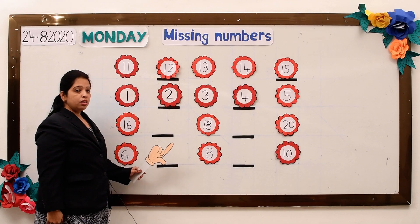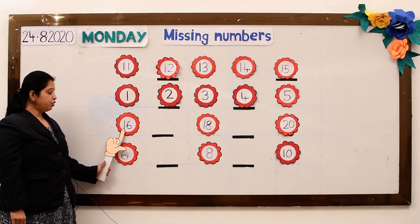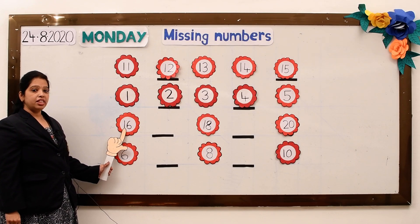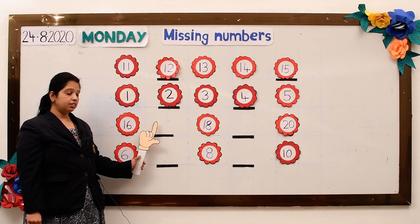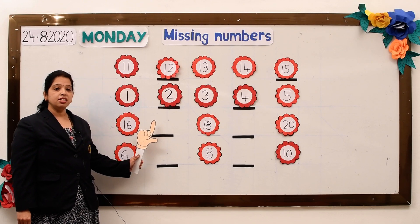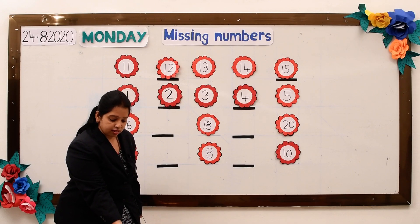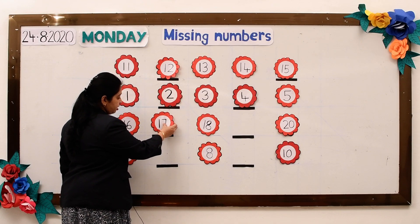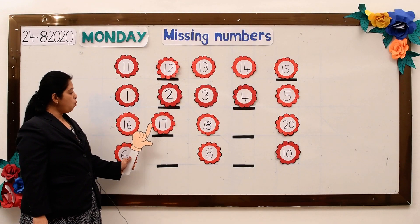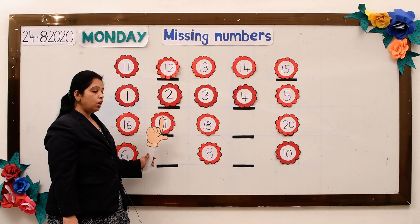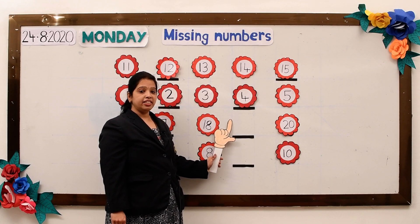Now let us move towards the third line. In the third line, which number can you see? Yes, 16. So can you guess which number is missing here? Yes, number 17 is missing. 16, 17, 18. Yes, here 19 is missing.